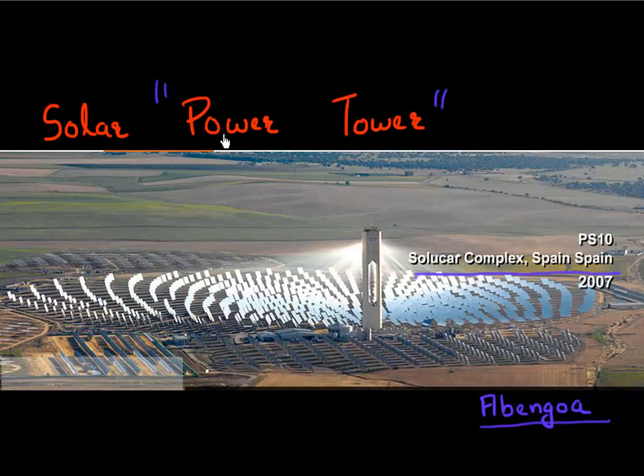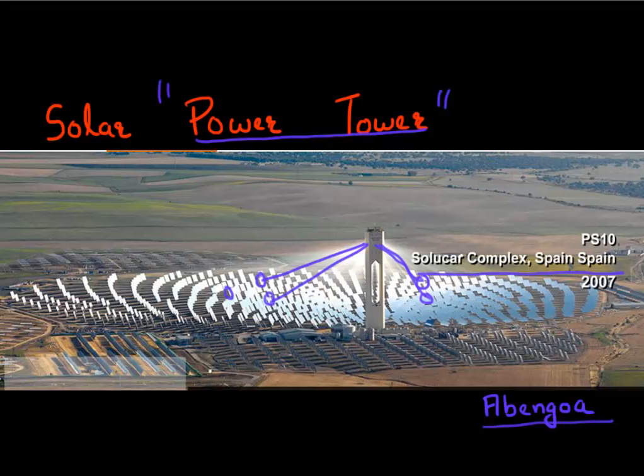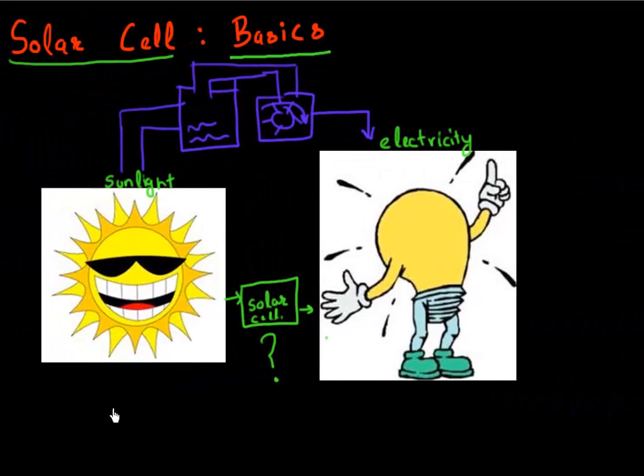And this is called power tower configuration. And the way it works is that you have these dishes of mirrors, and each of them has a dual tracker. It tracks the position of sun very accurately and reflects that sunlight from the sun to this tower. And this tower has essentially this gas turbine which heats up. It has this water circulating here and this sunlight hitting over here heats up that water and that essentially generates electricity.